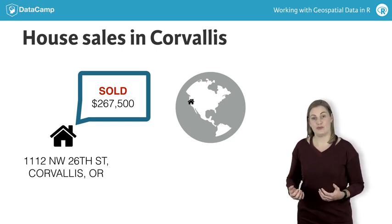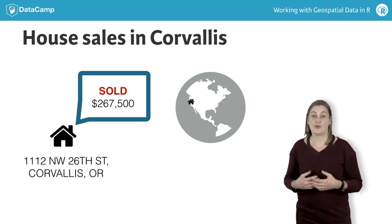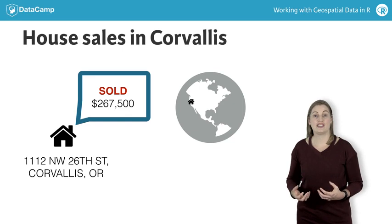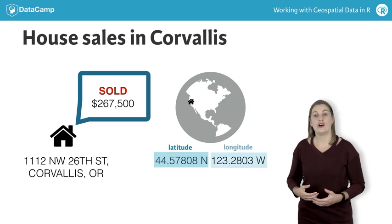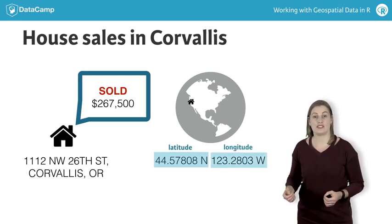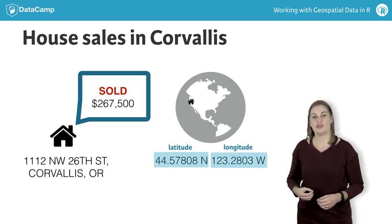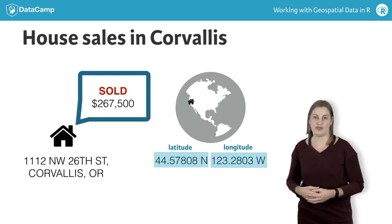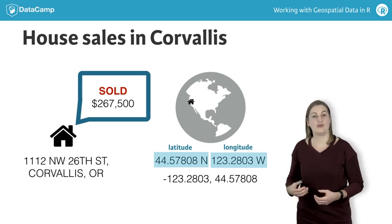All this data is associated with a house at a specific location, so we can consider this spatial data. Although the address specifies the location, it isn't a set of coordinates. To work with these house sales, we need to convert the address to a set of coordinates. Latitude specifies the position north to south, and longitude the position east to west. Often the north-south and east-west abbreviations are dropped, and instead we use positive numbers for north latitude and east longitude, and negative numbers for south latitude and west longitude.